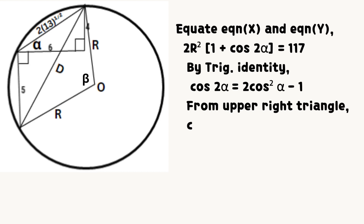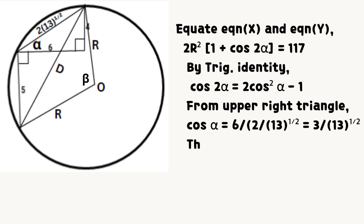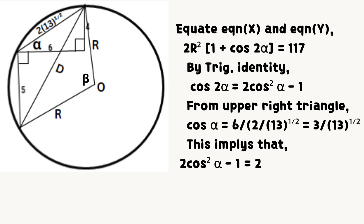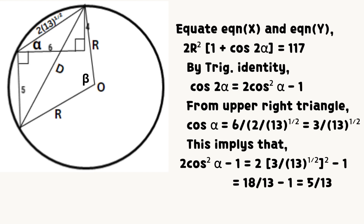Equating equation X and equation Y as shown on the screen. By the trigonometric identity, cosine 2 alpha equals 2 cosine squared alpha minus 1. From the upper right triangle, cosine alpha equals 3 divided by the square root of 13. Simplifying using the trigonometric identity, we have that cosine 2 alpha equals 5 divided by 13.